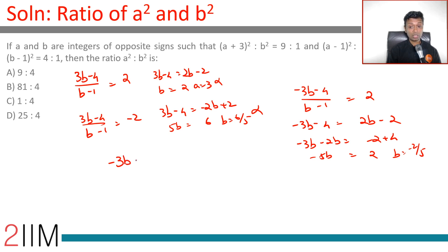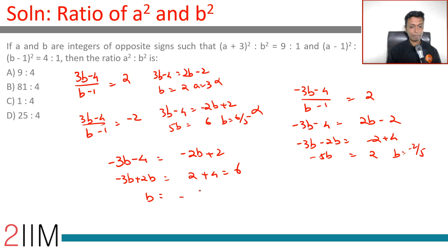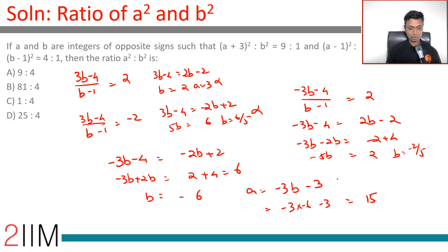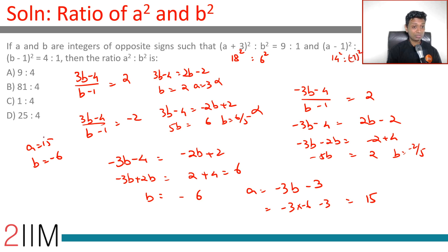The last variant: (−3B−4)/(B−1) = −2 gives −3B−4 = −2B+2, so −B = 6, meaning B = −6. With A = −3B−3 = −3(−6)−3 = 18−3 = 15, we get A = 15 and B = −6. Verification: (15+3)² = 18² and (−6)² = 36, ratio is 9. Also (15−1)² = 196 and (−6−1)² = 49, ratio is 4. Both conditions hold, and A and B are integers of opposite signs.